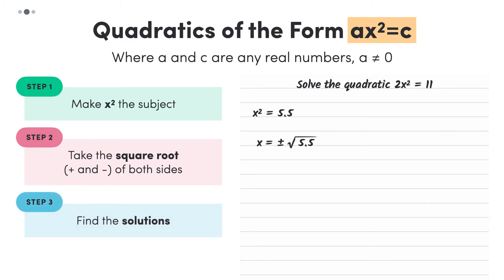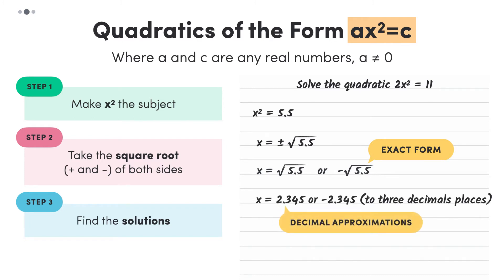So now we find our solutions. X equals the positive square root of 5.5, or the negative square root of 5.5. These answers are in what we call exact form. That is, they're not rounded off in any way. If we were asked to express our answers in decimal approximations, then we would plug these roots into our calculators to find that they are approximately equal to 2.345 and negative 2.345 to 3 decimal places.